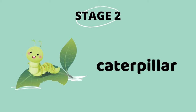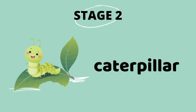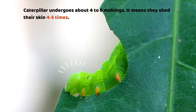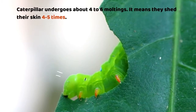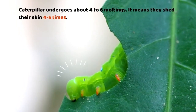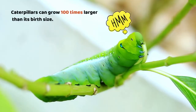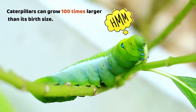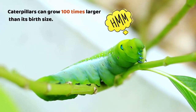Stage two: caterpillar. The next stage is the caterpillar. The job of the caterpillar is to eat and eat and eat. As the caterpillar grows, it splits its skin and sheds it about four or five times. Food eaten at this time is stored and used later as an adult. Caterpillars can grow 100 times their size during this stage.